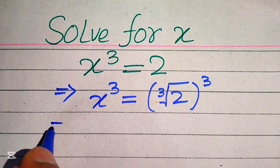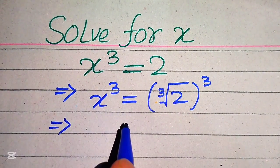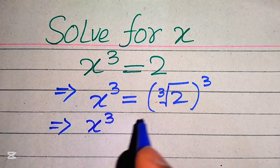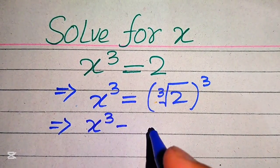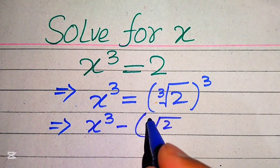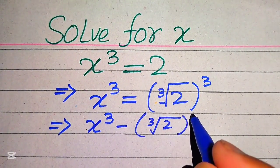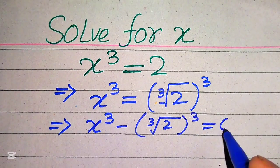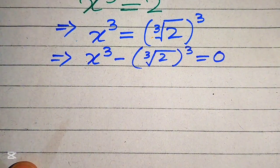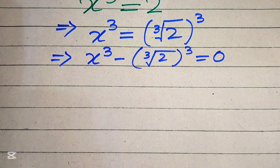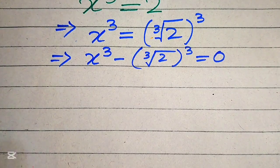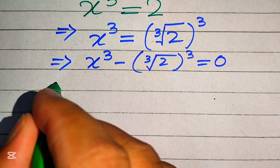In the next step, we move the term from the right hand side to the left hand side. x cubed is a positive term, but when moved to the left hand side it becomes negative, written as cube root of 2 whole cubed. So the whole equation equals zero, and now we apply the difference of cubes formula.